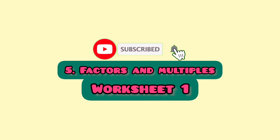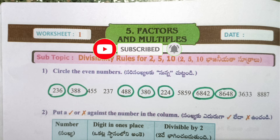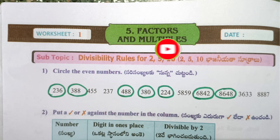Factors and Multiples Worksheet 1. Circle the even numbers: 236, 388, 488, 380, 224, 6842, 8648.